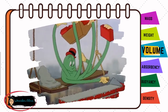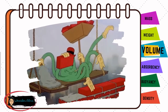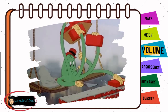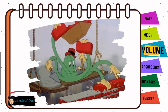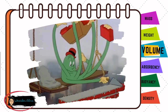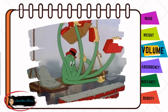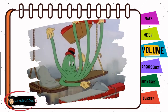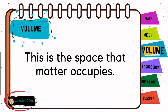Matter takes up space. A brick layer stacks bricks on top of each other to build a wall. No two bricks can occupy the same place because the matter in each brick takes up space. The amount of space that matter in an object occupies is called the object's volume.